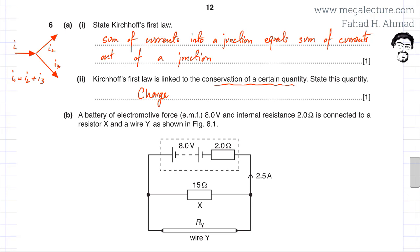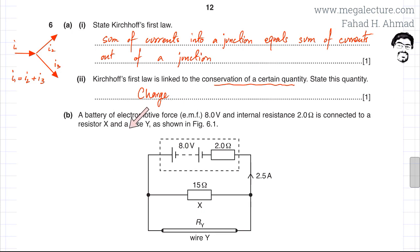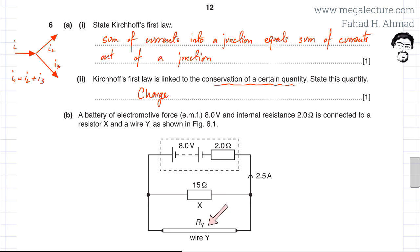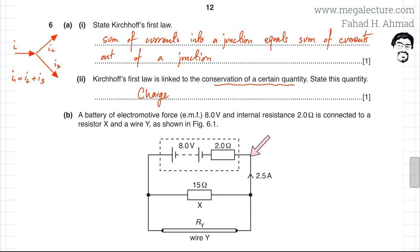In the next part of the question, a battery of EMF 8 volts and internal resistance 2 ohms is connected to a resistor X and a wire Y as shown in figure 6.1. There is a 15 ohm resistor, and in parallel there is wire Y which has resistance R_Y. The current going through this wire is 2.5 amperes.